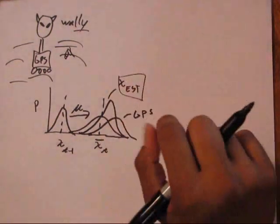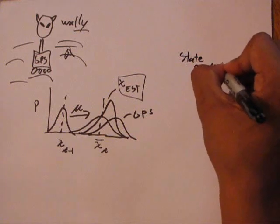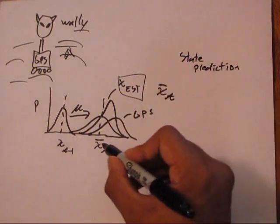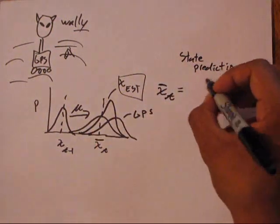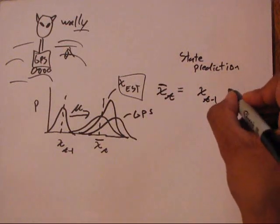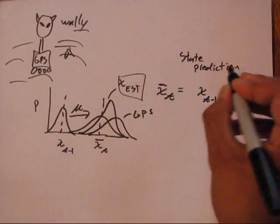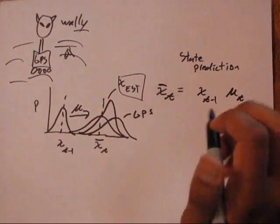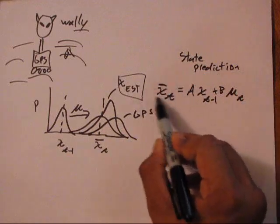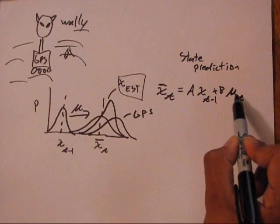So there's a couple steps to it. The first step is the state prediction. And that is, we're trying to figure out how to calculate x bar of t, this state prediction. Well, we know that it's a function of the prior state, x of t minus 1. And also, it's going to be a function of that motor command U, U of t. The important thing in the Kalman filter, the first assumption, is that it's a linear system of equations. That is, this predicted state is a linear function of the prior state and the command.